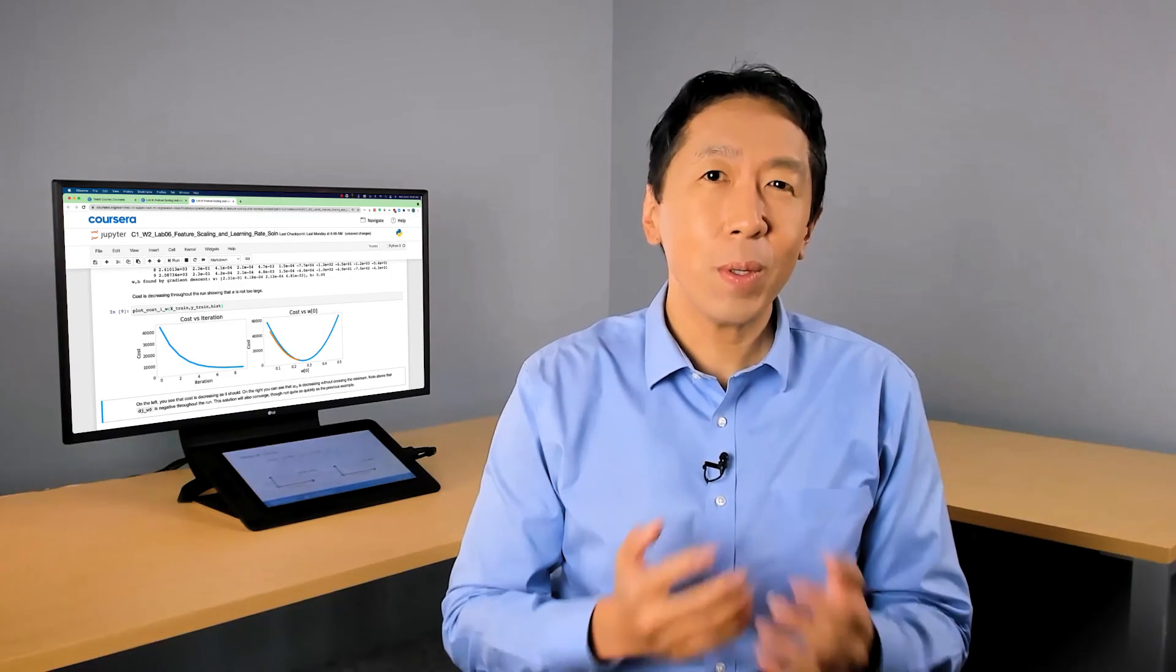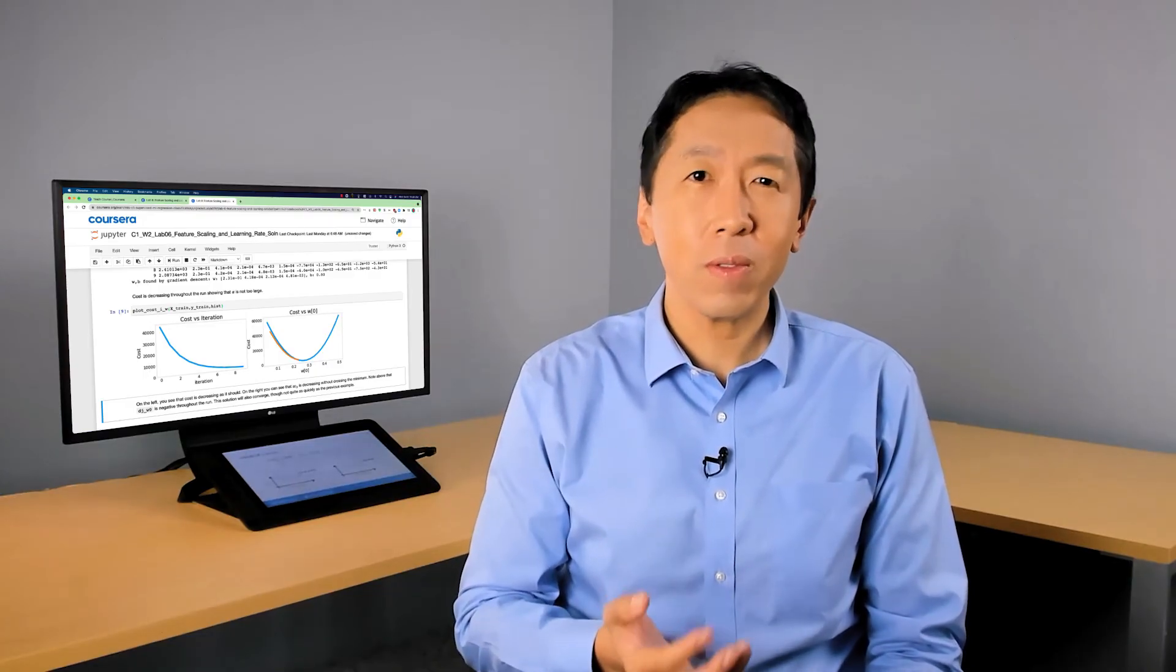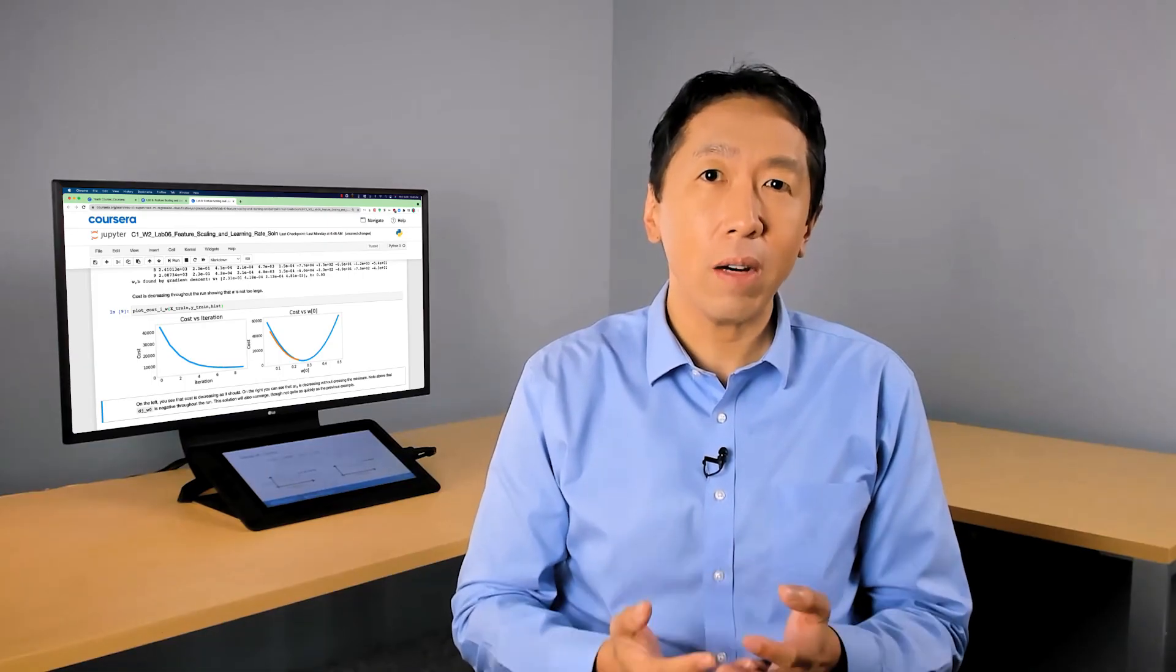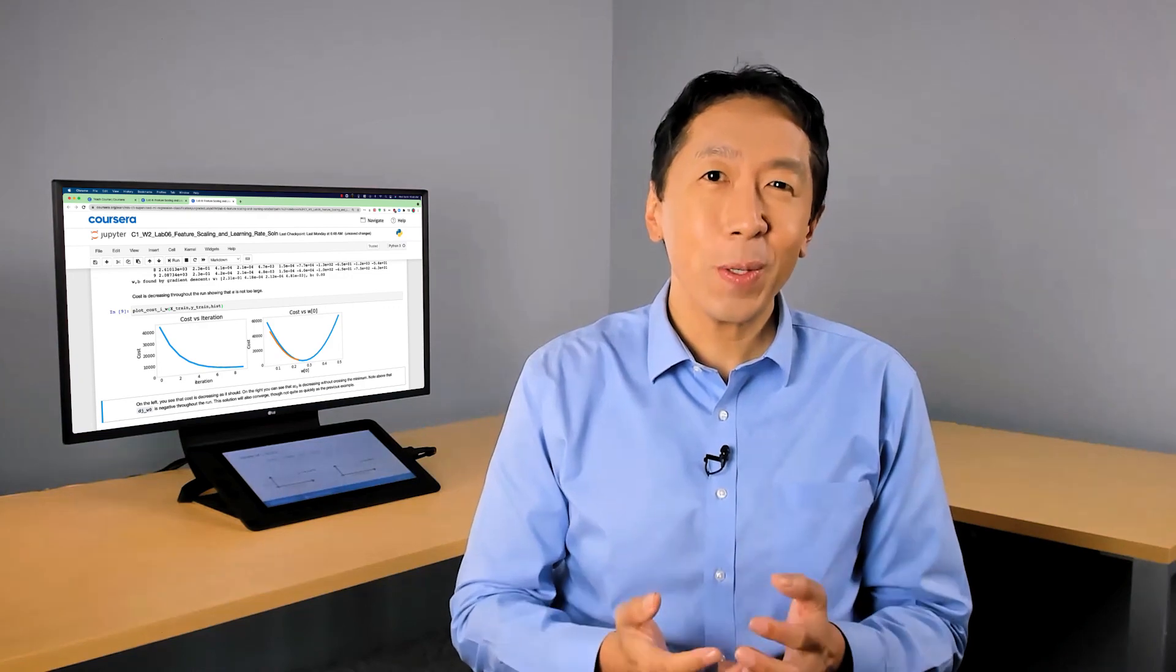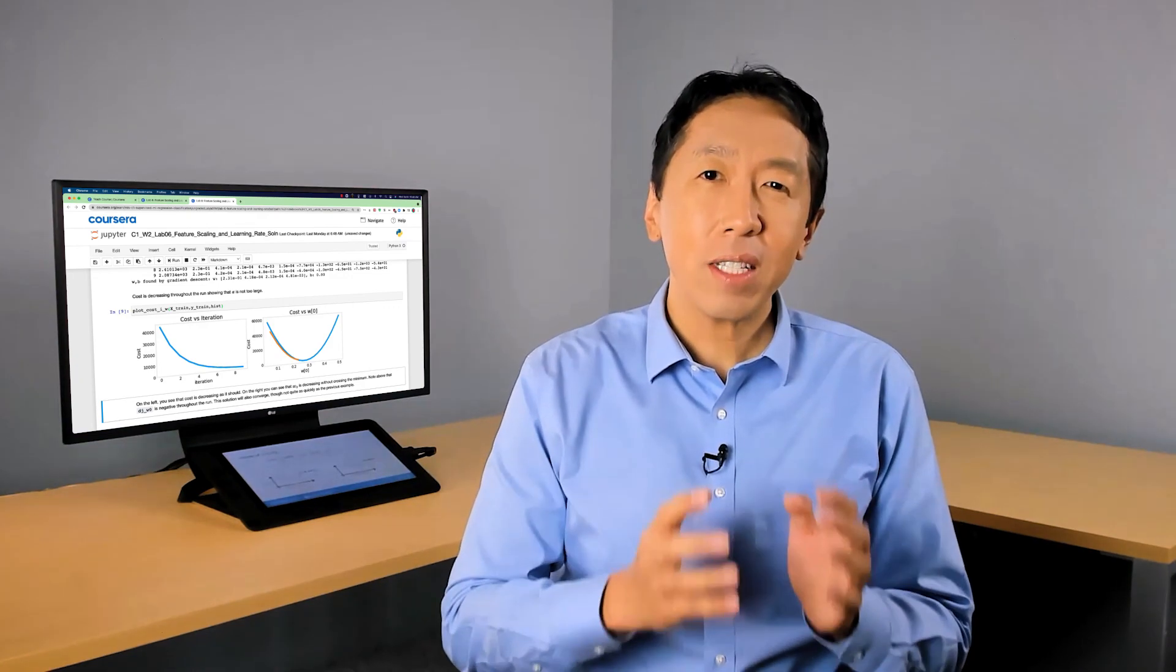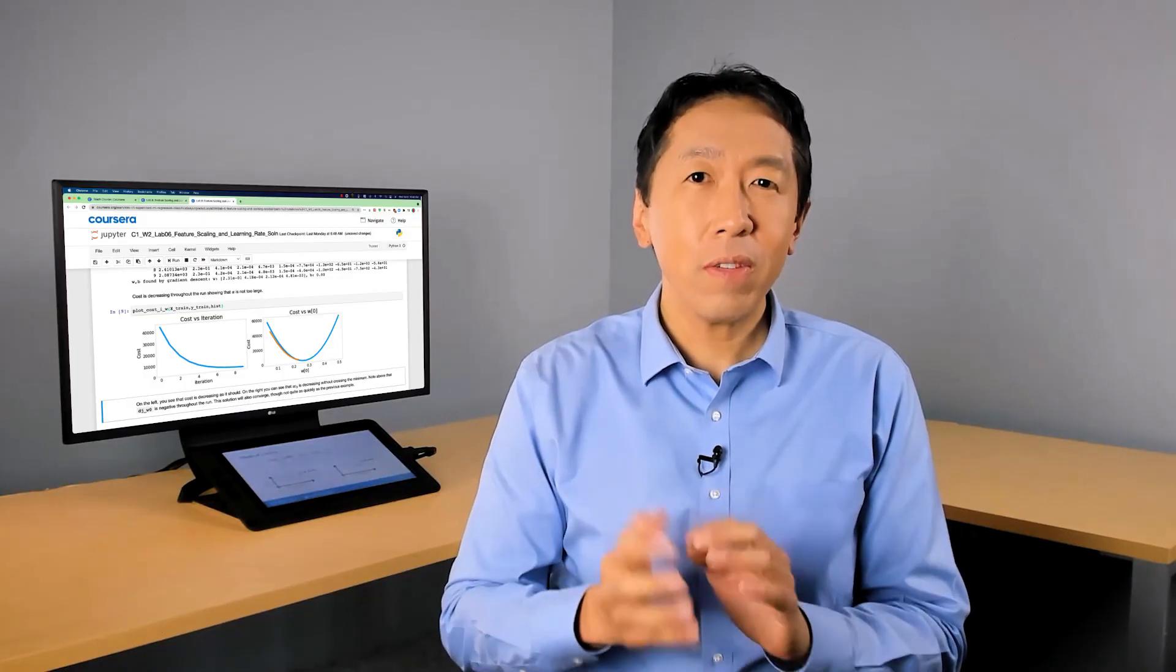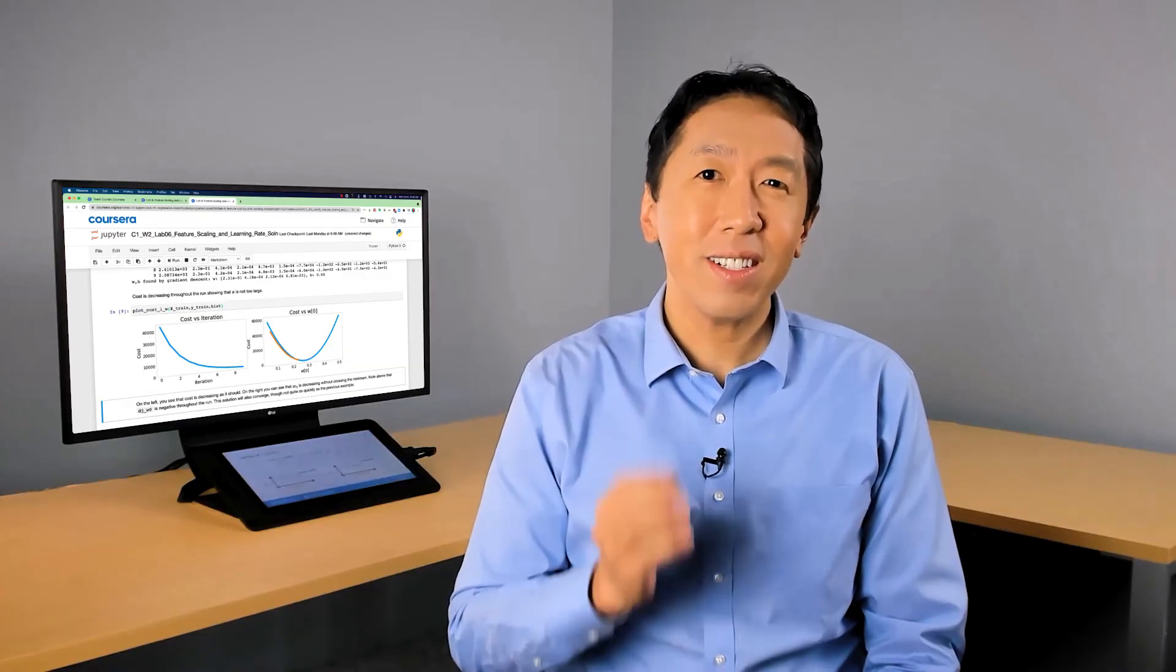Choosing learning rates is an important part of training many learning algorithms, and I hope that this video gives you intuition about different choices and how to pick a good value for alpha. Now, there are a couple more ideas you can use to make multiple linear regression much more powerful, and that is choosing custom features, which will also allow you to fit curves, not just a straight line, to your data. Let's take a look at that in the next video.